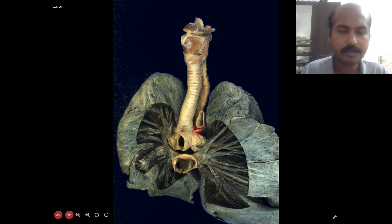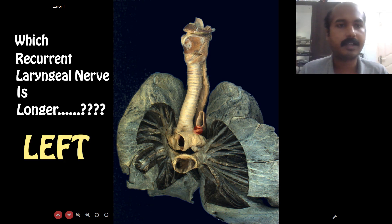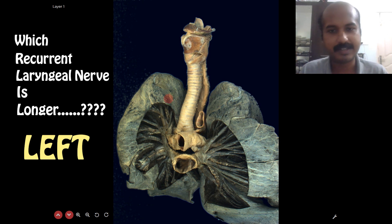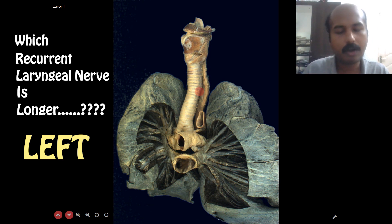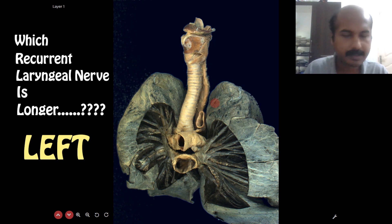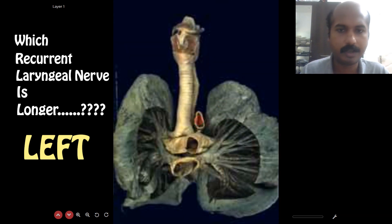This is the left recurrent laryngeal nerve. It is usually asked which recurrent laryngeal nerve is longer — the answer is the left. The left is longer because the arch of the aorta on the left side pulls it downward; there is no arch of the aorta on the right side normally. Therefore, the left recurrent laryngeal nerve is longer and more prone to injuries, lesions, or diseases of the thorax, making it more susceptible to recurrent laryngeal nerve palsy.